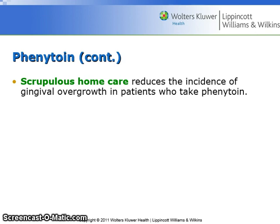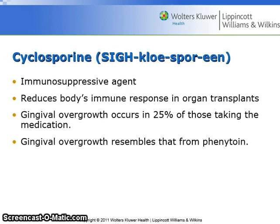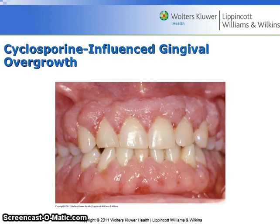Scrupulous home care reduces the incidence of gingival overgrowth in patients who take Dilantin. Cyclosporin is an immunosuppressive agent that reduces the body's immune response in organ transplants. Gingival overgrowth occurs in 25% of those taking the medication, and it resembles that from phenytoin. This is an image of cyclosporine-influenced gingival overgrowth.